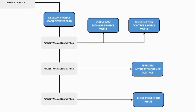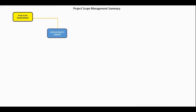Let's take them step by step. Let's take a look at Direct and Manage Project Work, for example. It involves work performance data as an output, and it involves deliverables. How do we know how to work this process? It's from the project management plan — it tells us how to work these other processes as well. This is a recurring theme throughout the PMBOK guide.